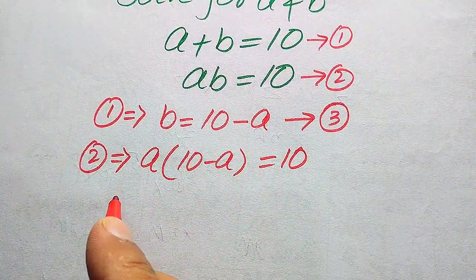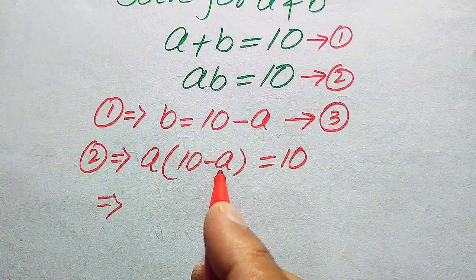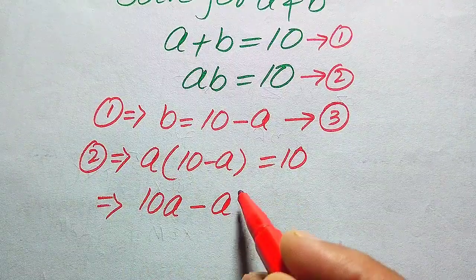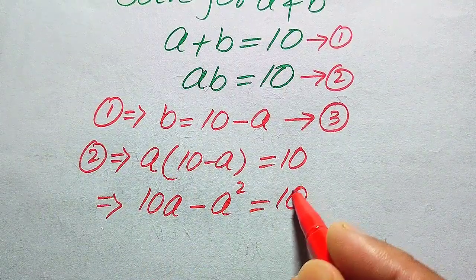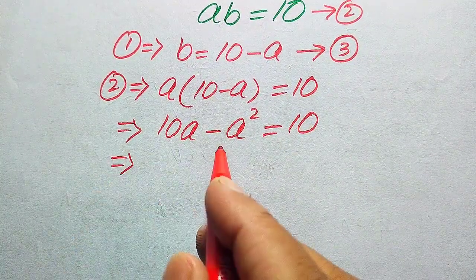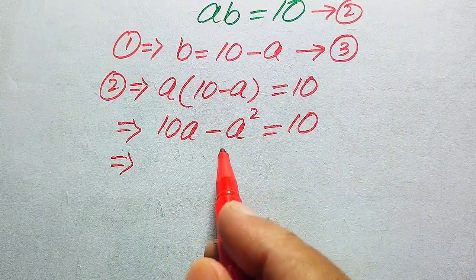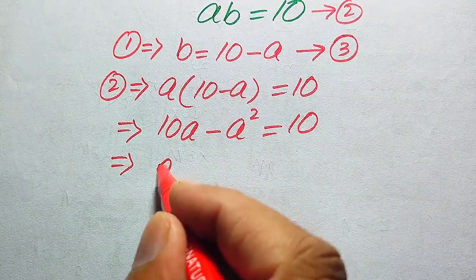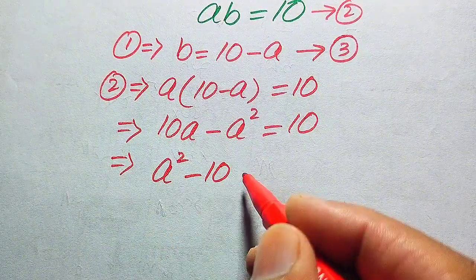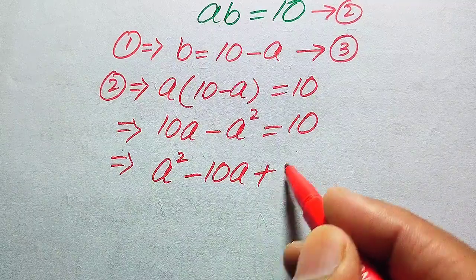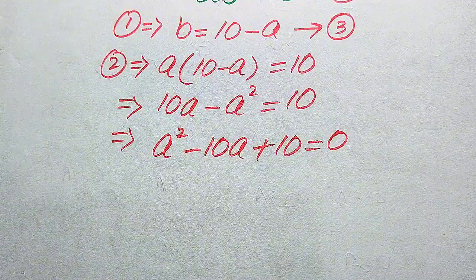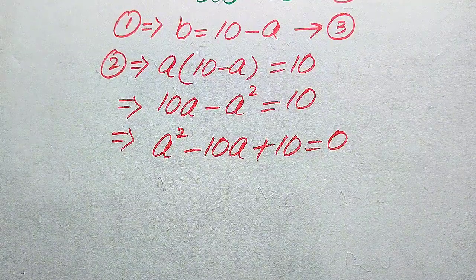We need more simplification. We multiply a separately on both values: 10a minus a squared equals 10. In the next step, we move both values from the left hand side to the right hand side. Minus a squared becomes plus a squared, plus 10a becomes minus 10a, giving us: a squared minus 10a plus 10 equals zero. This is a quadratic equation in variable a.